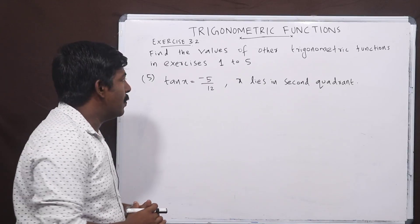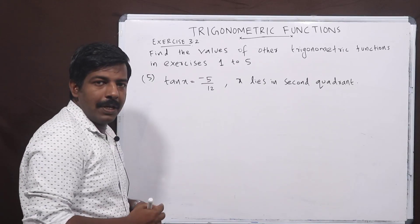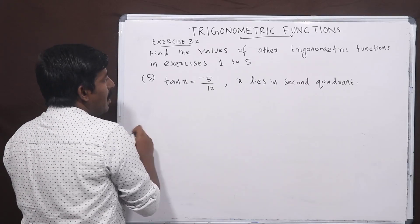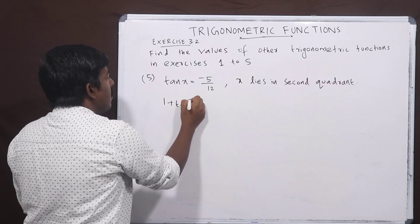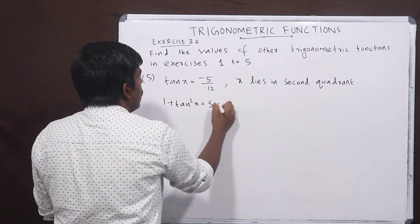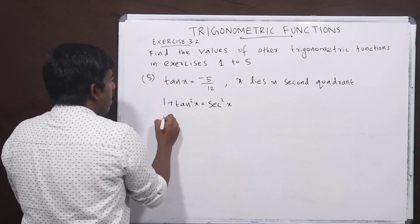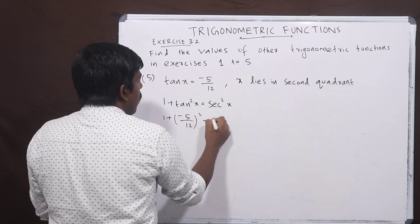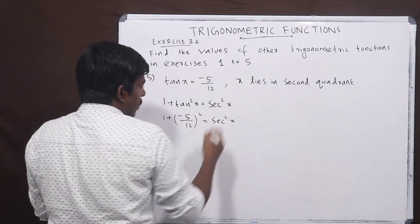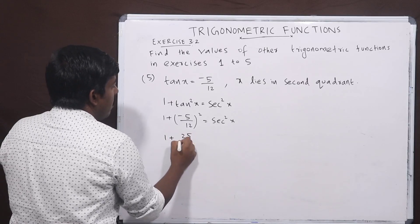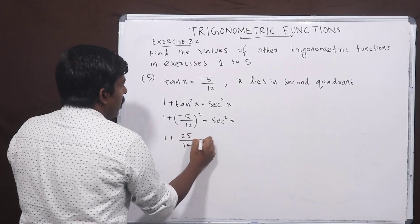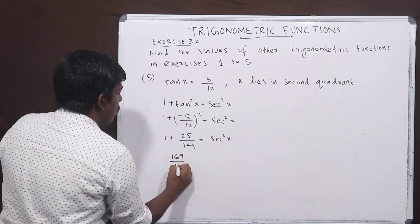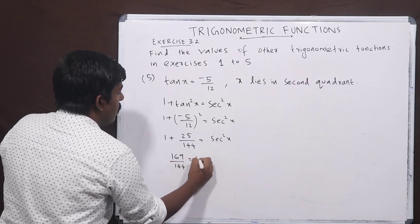New question: tan x is equal to minus 5 by 12, and x lies in the second quadrant. Using the identity 1 plus tan squared x equals sec squared x, we substitute: 1 plus (minus 5 by 12) squared equals sec squared x. That is 1 plus 25 by 144 equals sec squared x.